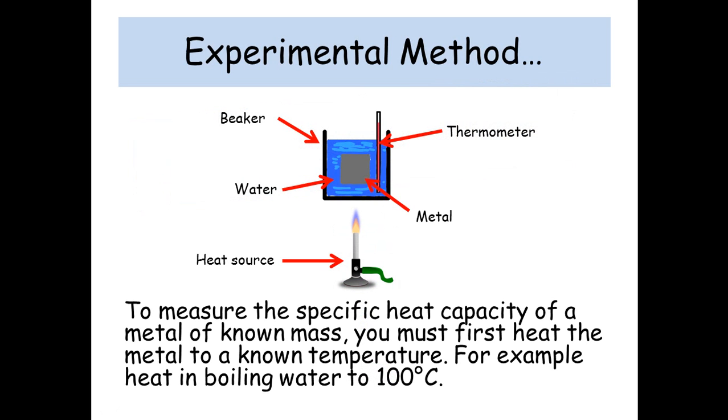So this is the experimental method. Firstly, to measure the specific heat capacity of a metal of known mass, you must first heat the metal to a known temperature. For example, you can heat in boiling water to 100 degrees C.